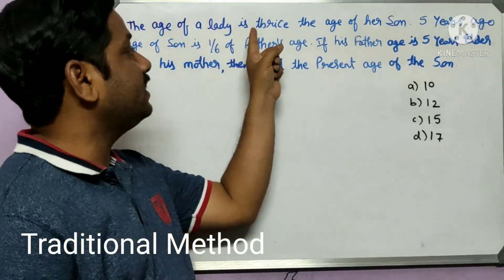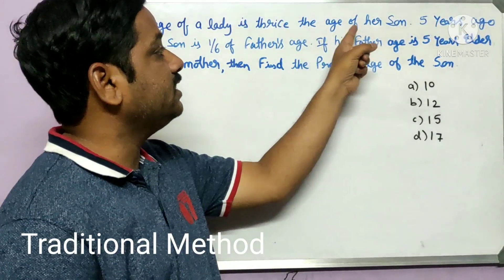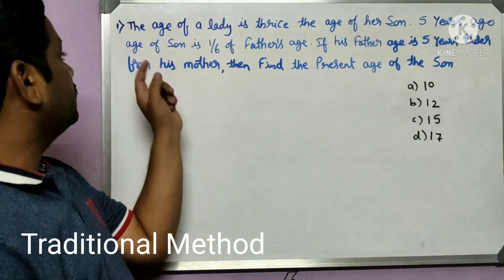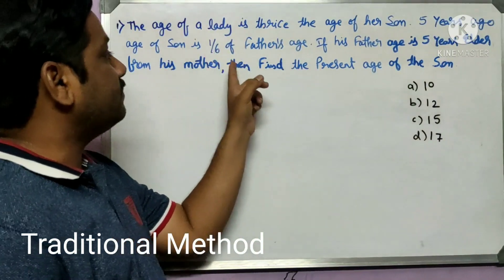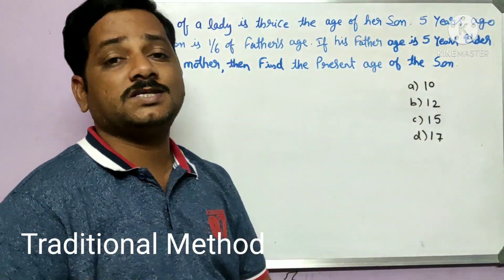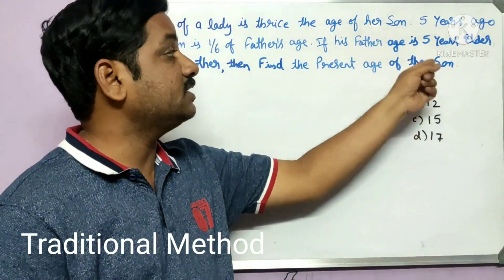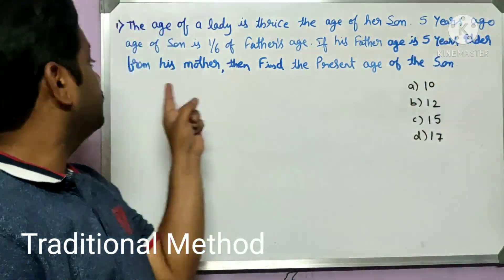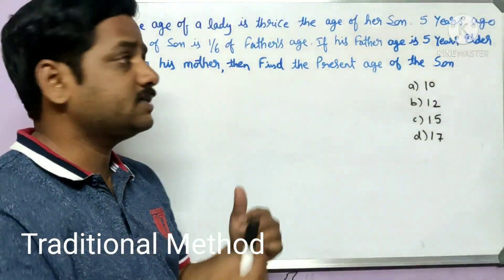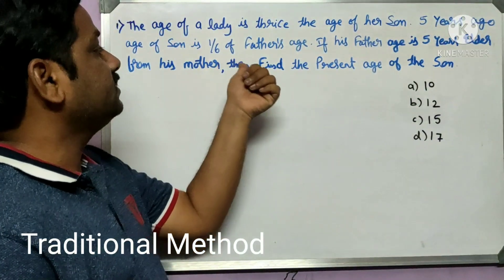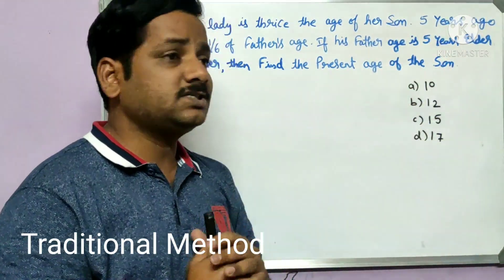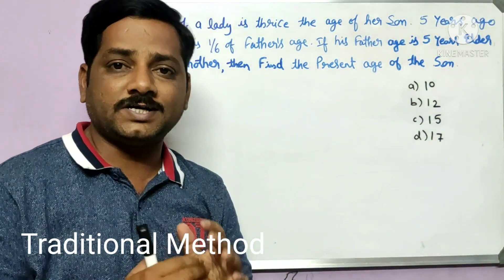Now look at the question: The age of a lady is thrice the age of her son. Five years ago the age of the son is one-sixth of the father's age. If the father is five years elder than the mother, then find the present age of the son. Let us solve it traditionally first.